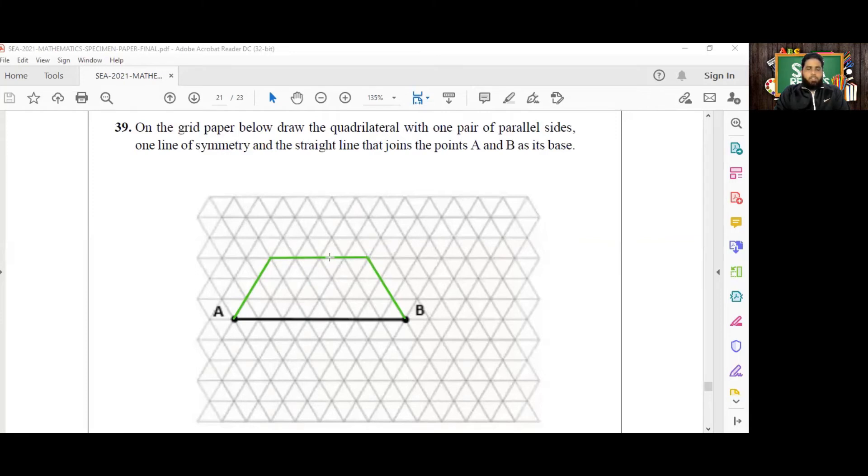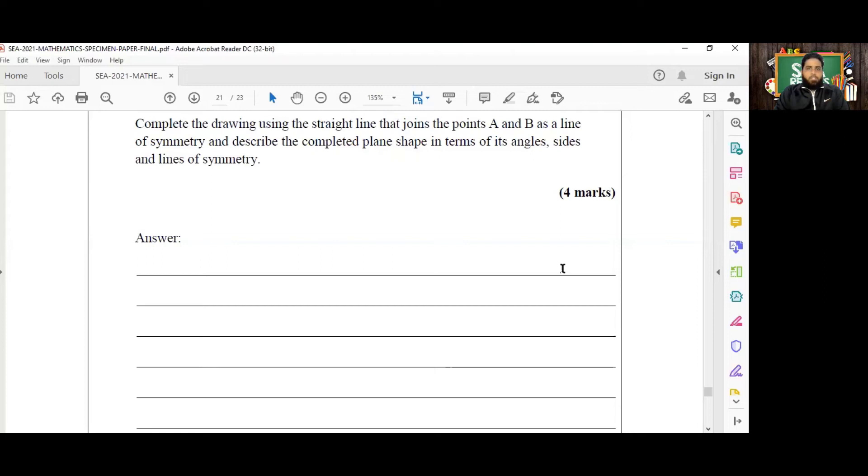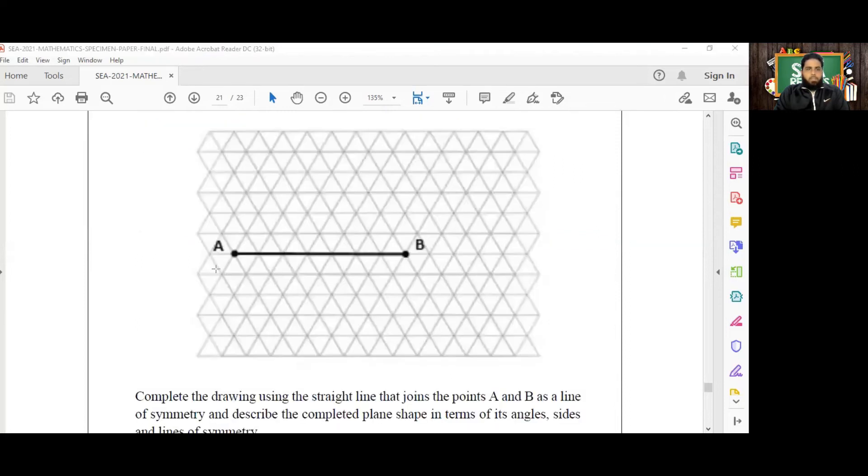So that's the first part of the question. The question continues: complete the drawing using the straight line that joins points A and B as a line of symmetry and describe the completed plane shape in terms of its angles, sides, and lines of symmetry. I'm now just going to redraw the trapezium.